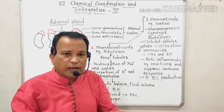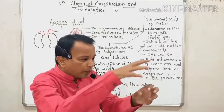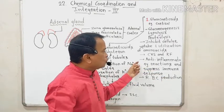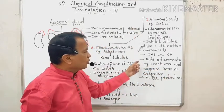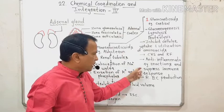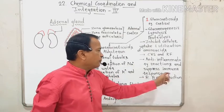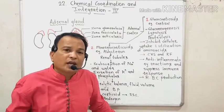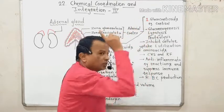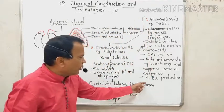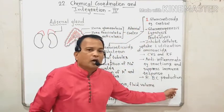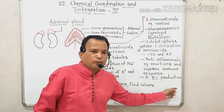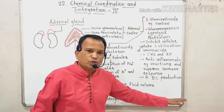Cortisol plays an important role in anti-inflammatory response and suppresses the immune response. It also stimulates the formation and production of red blood cells (RBCs).